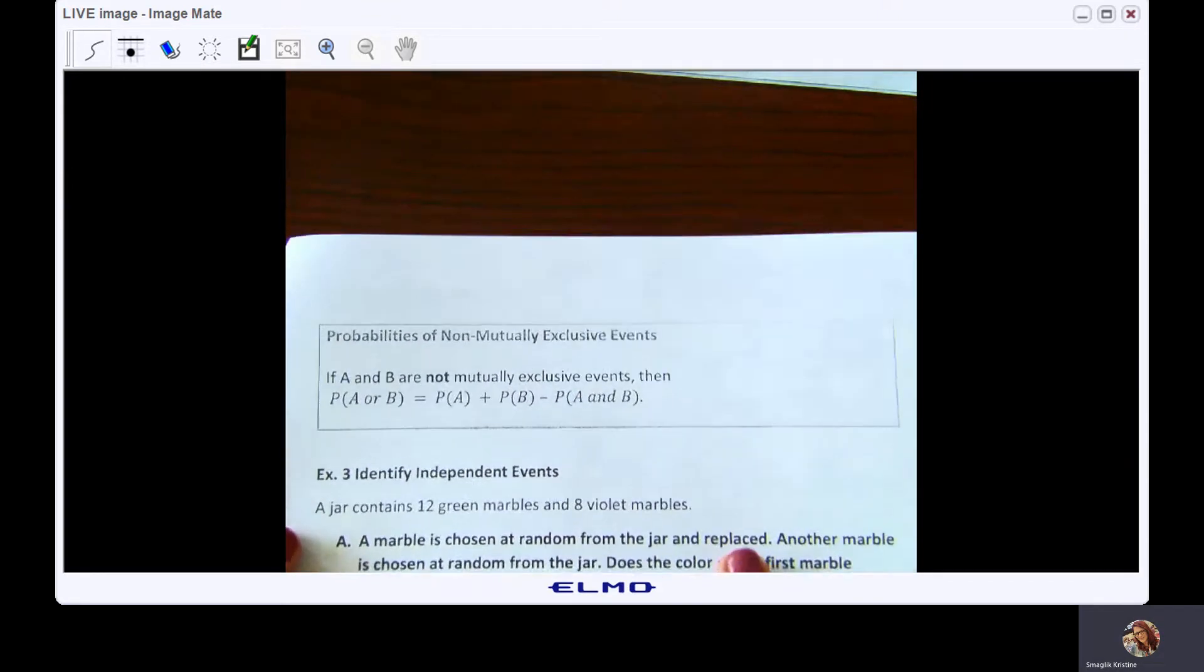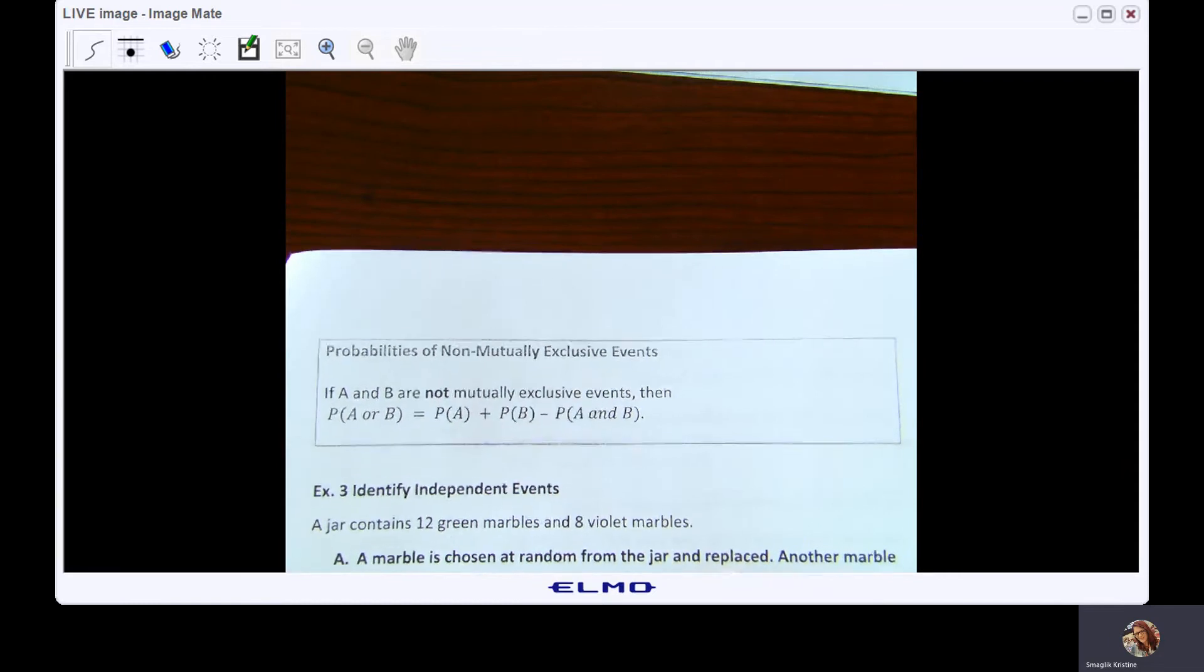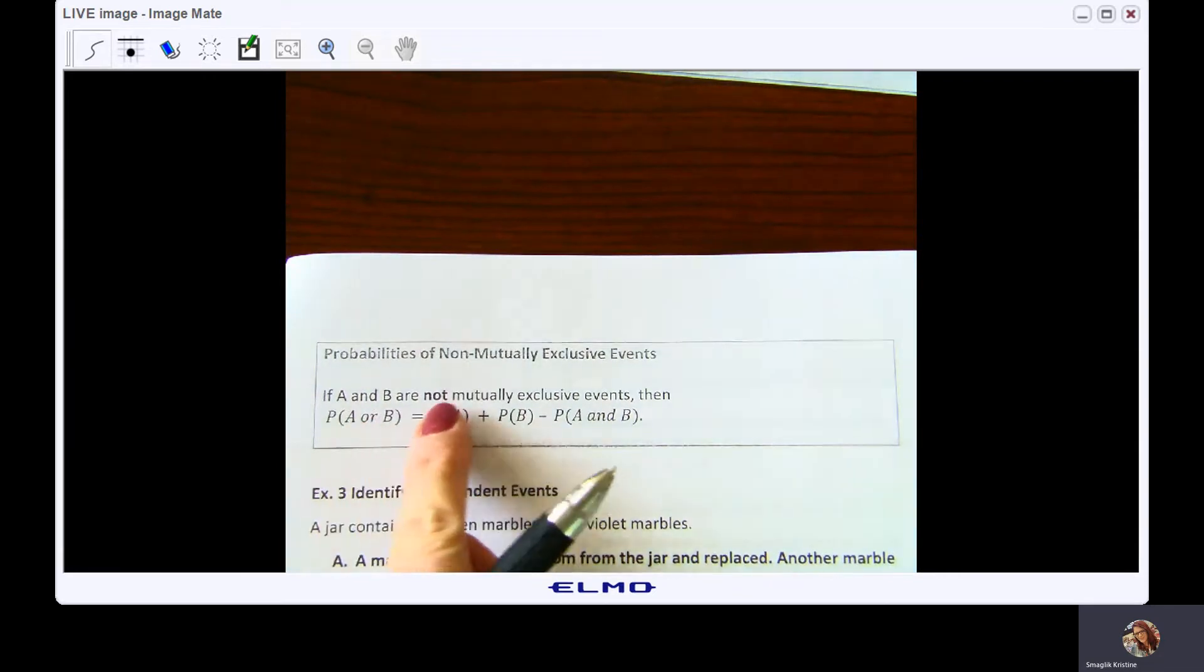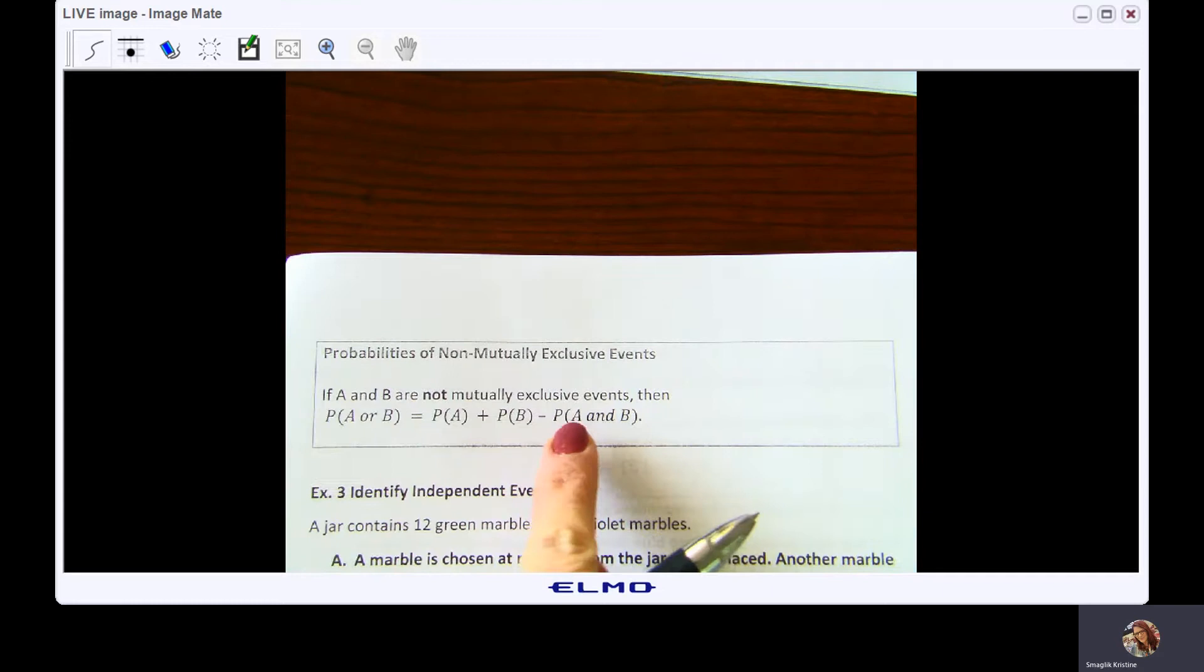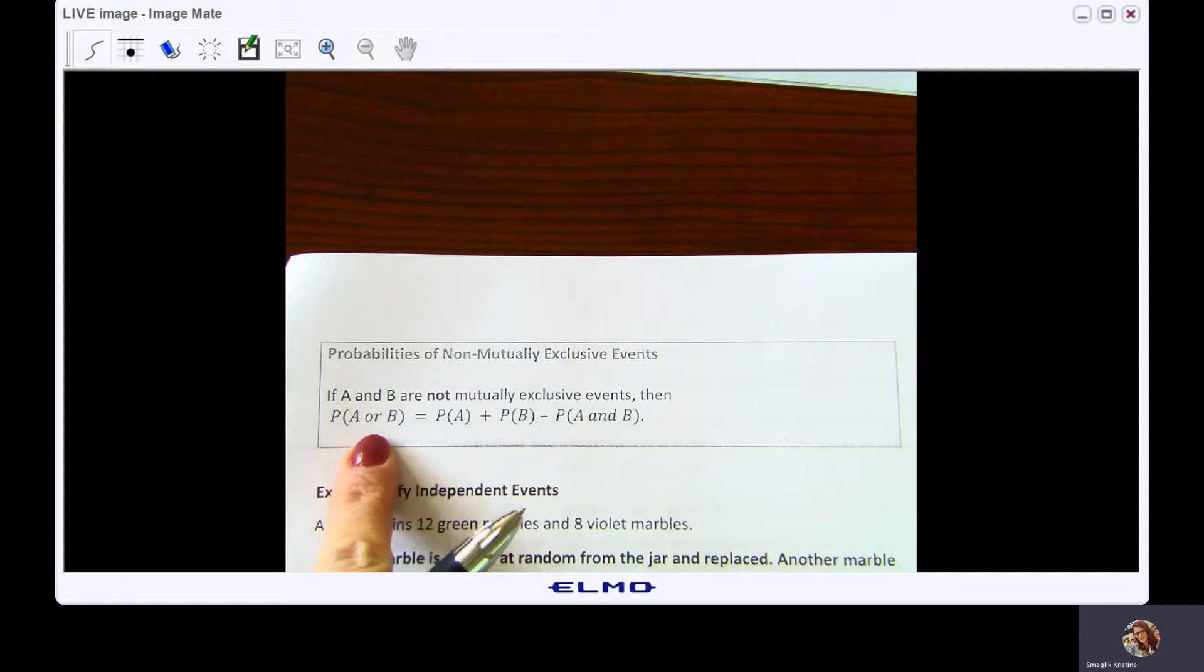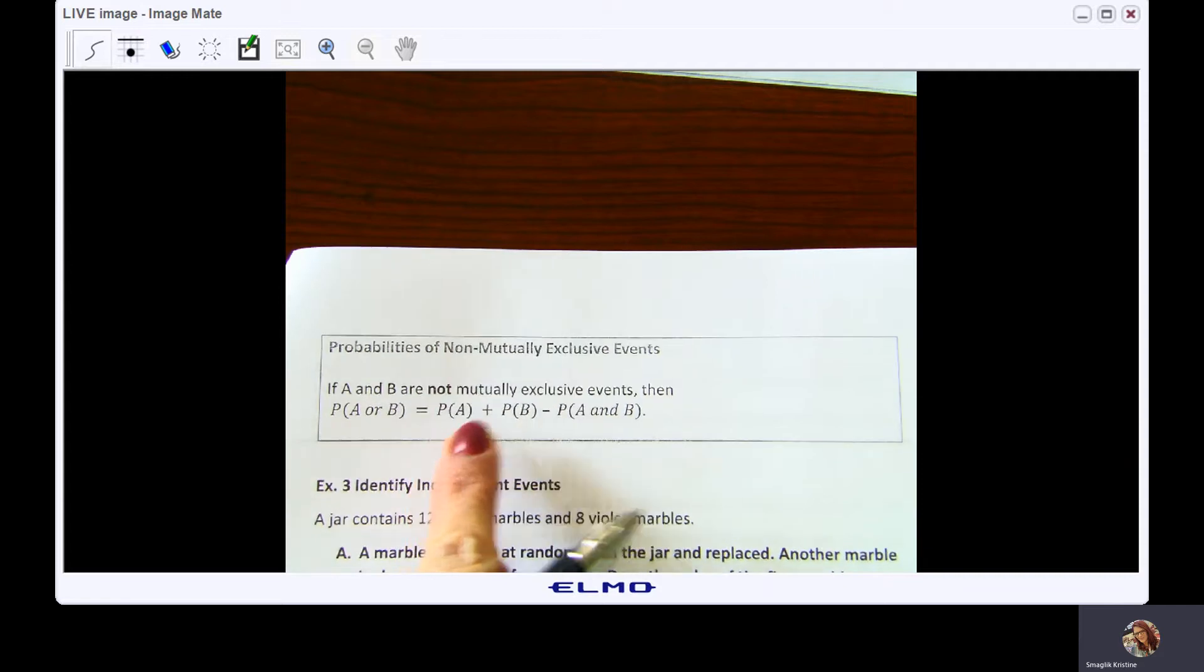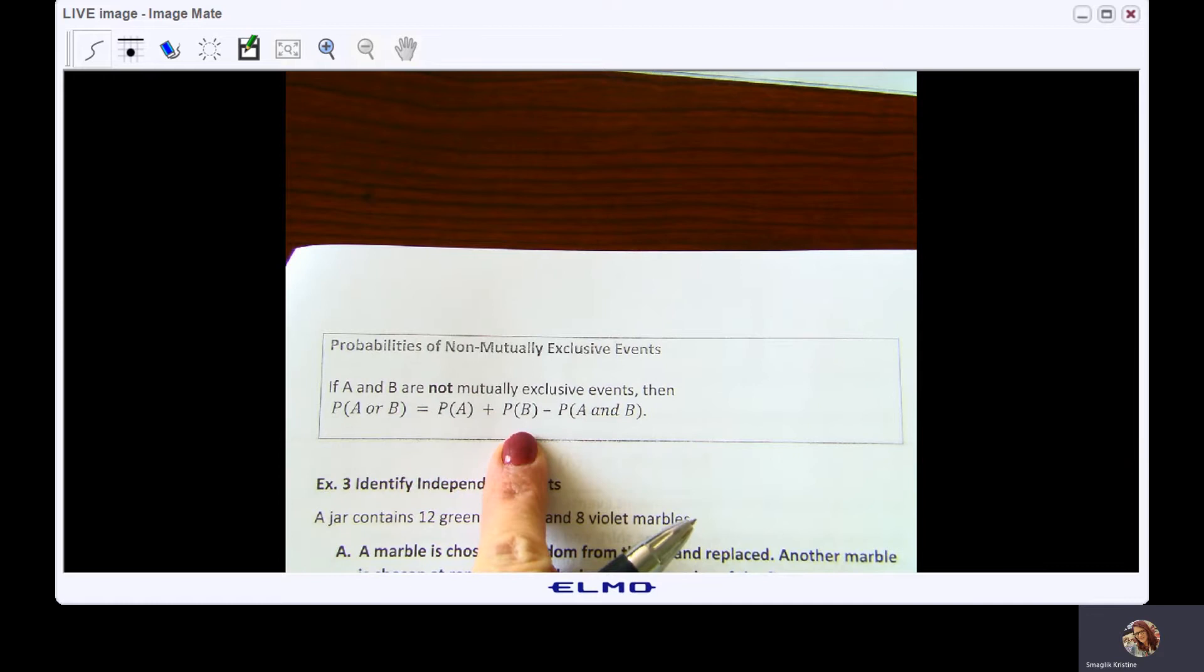So here we go. Probabilities of non-mutually exclusive events: if A and B are not mutually exclusive, meaning that they do share outcomes, then the probability of event A or B occurring equals the probability of event A plus the probability of event B minus the probability of event A and B.